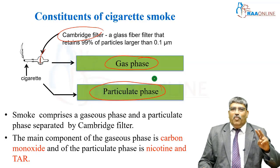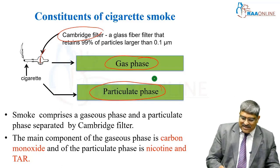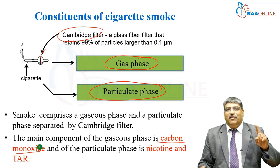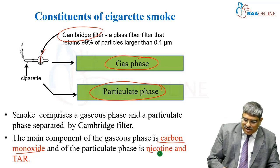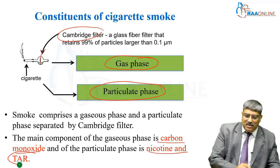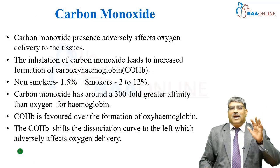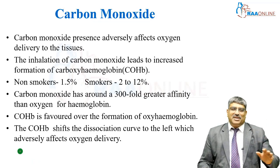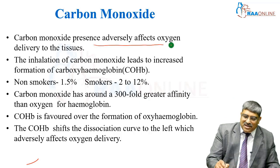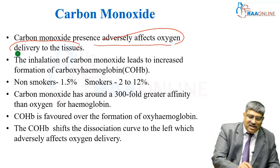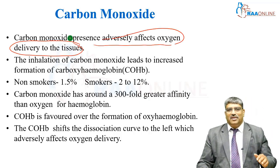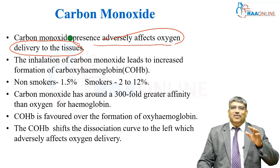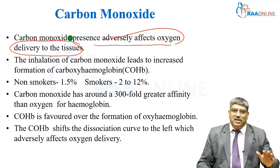The main component of the gaseous phase is carbon monoxide, and that of the particulate phase is nicotine and tar. Carbon monoxide presence adversely affects the oxygen delivery to the tissue. The inhalation of carbon monoxide leads to the formation of carboxyhemoglobin.